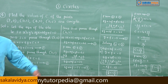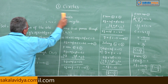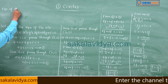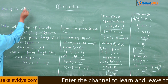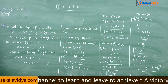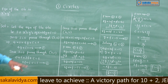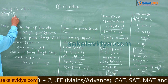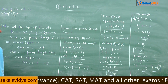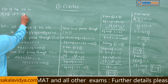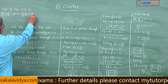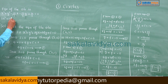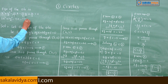Now we know g, f, and c values. The equation of the circle is x² + y² + 2gx + 2fy + c = 0, which gives x² + y² − (13/3)x − (17/3)y + 14/3 = 0. Multiplying both sides by 3: 3x² + 3y² − 13x − 17y + 14 = 0.